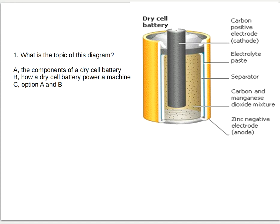And the answer is letter A, the components of a dry cell, because this here is all dry cell components: carbon positive electrode cathode, electrolyte paste, separator, carbon and manganese dioxide mixture, zinc negative electrode anode, and all of these are the components of dry battery cell.